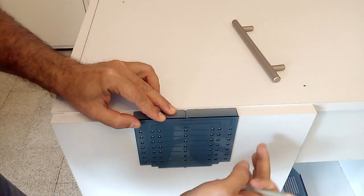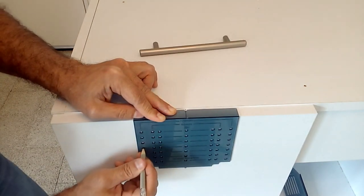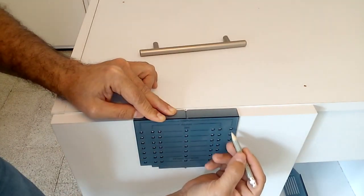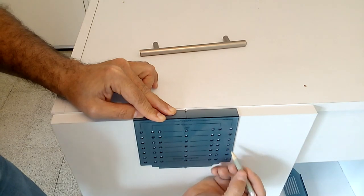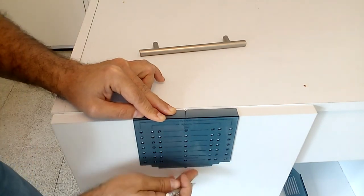We verify which is the size of the handle that we are going to install and at what height we would like to place it to be able to make the mark with our pencil. Once the marks are made we can proceed to drill the holes.